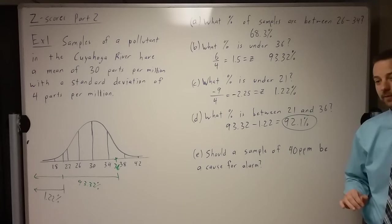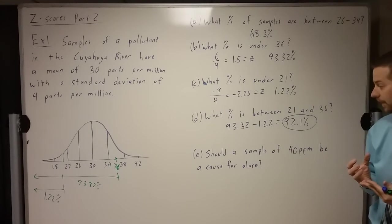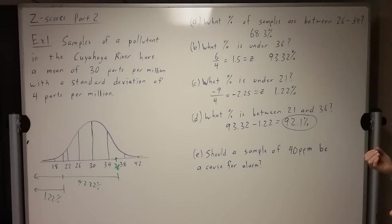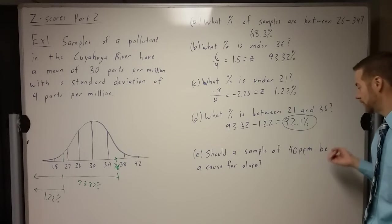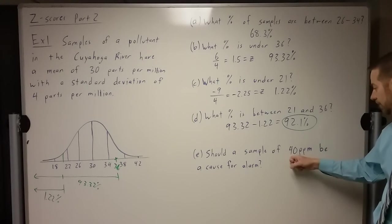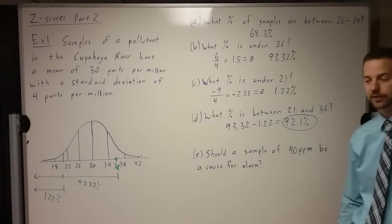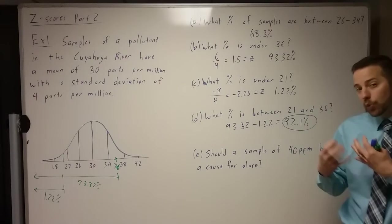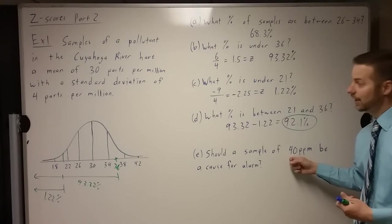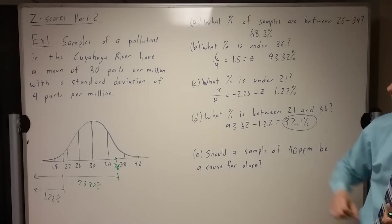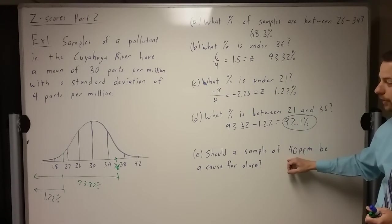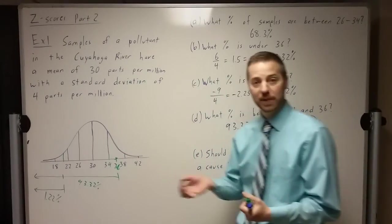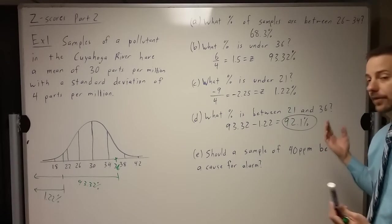Now, a little bit of interpretation of this, because this is how this is used a lot in industry and in science in those fields. Should a sample of 40 parts per million be a cause for alarm in this river? Well, here's what we have to think. What's the probability? What are the chances that this sample comes along? This is a normal distribution, so 40 parts per million is up here, so it's getting pretty far up there. So how rare is it, basically, is the question.